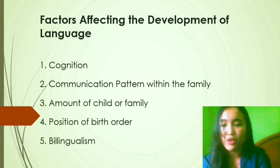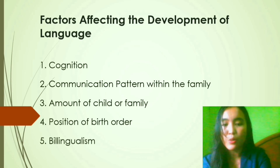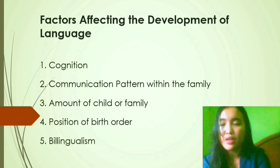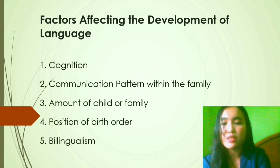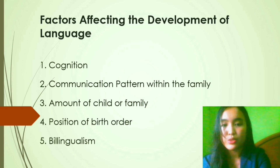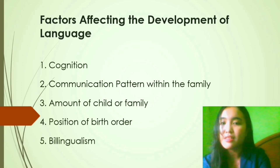Three: amount of children in the family. In families with many children or family members, the language development of the child is faster because communication takes place in a more varied way compared to having only a single child and no other members besides the core family. Four: position of birth order. The child born in the middle position will have faster language development than the first-born or youngest children. This is because the middle child has communication in both downward and upward directions, while the youngest child has only upward communication.